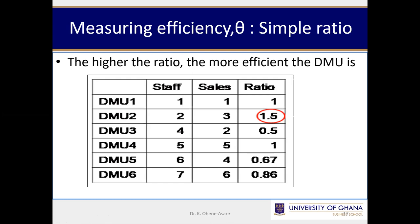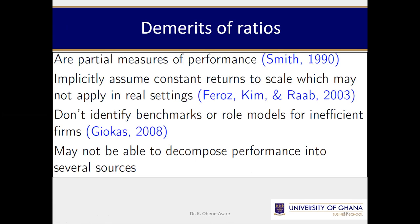Now this is the simple ratios method. Let's look at the disadvantages. Ratios are easy to compute and easy to interpret — those are fine. But the problems: they are partial measures of performance, according to Smith in 1990. Ratios are very partial.